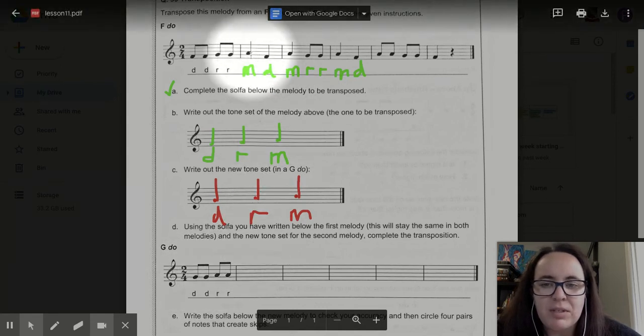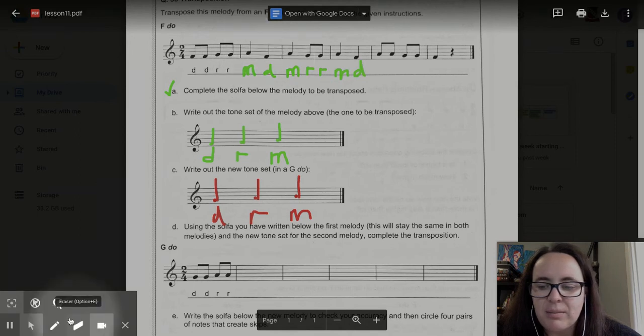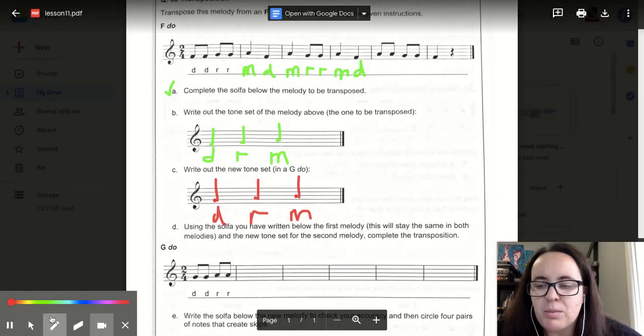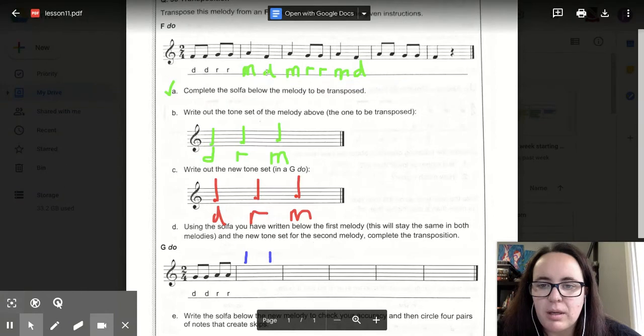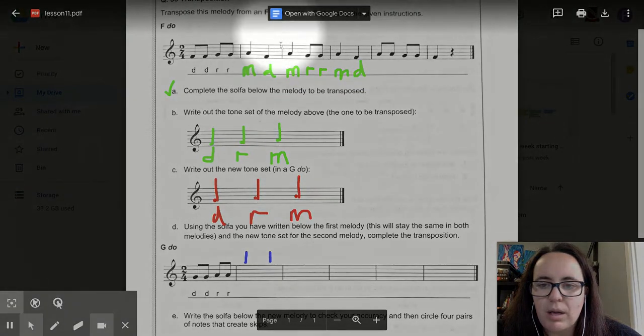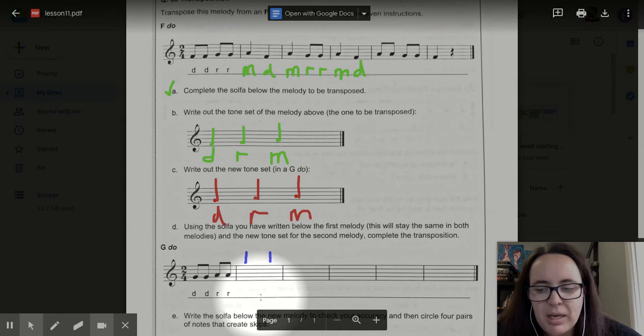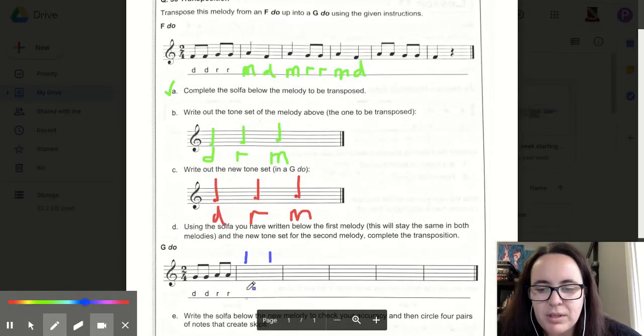Let's use those steps up here. Let's look at our rhythm first. We have TA TA in the second bar. So that means we need to write that here. Here's my rhythm up the top. Let's have a look up here. We have ME and DO as our solfege. So we need to put ME and DO as our solfege down here. So let's do that.